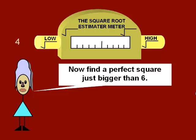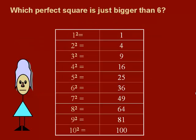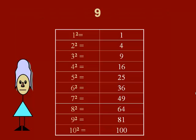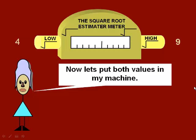Now, let's find a perfect square just bigger than 6. 9. The square root of 6 must be less than the square root of 9.